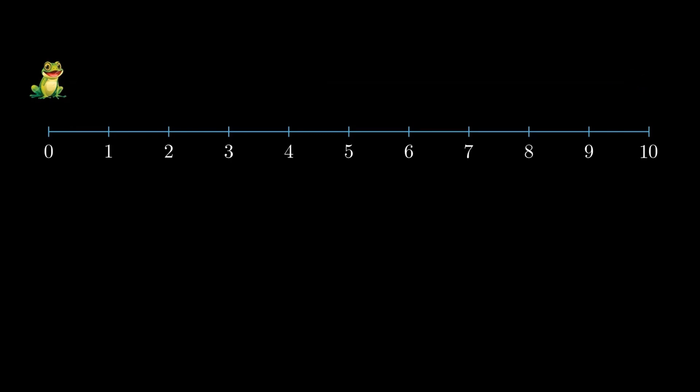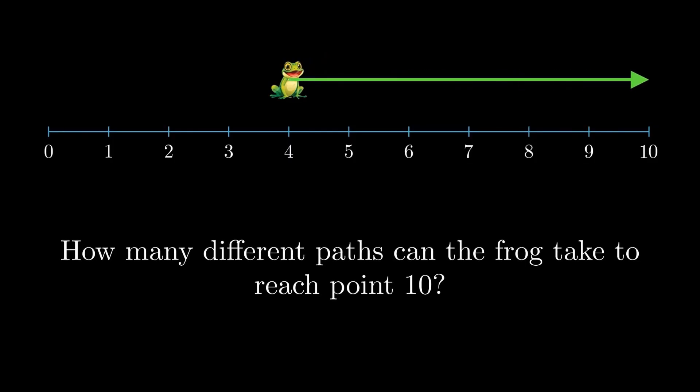For example, suppose the frog jumps to 4. From there, it cannot jump to 5 as it is one unit away, but it can jump to 6, 7, 8 and so on. So how many different paths can the frog take to reach 10? Pause the video here if you want to give it a try.